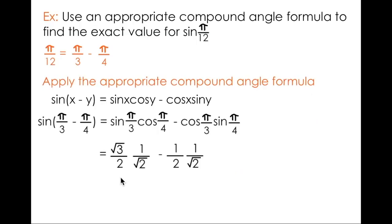So, using the special triangles, I can determine that the sine of pi over 3 is root 3 over 2, the cosine of pi over 4 is 1 over root 2. I'm subtracting the cosine of pi over 3, which I know to be a half, sine of pi over 4, which I know to be 1 over root 2. I've got multiplication of fractions happening here, so I can simplify my expression into this exact value.